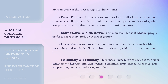Uncertainty Avoidance — it's about how comfortable a culture is with uncertainty and ambiguity. Some cultures embrace it, while others try to minimize it. Masculinity versus Femininity — masculinity refers to societies that favor achievement, heroism, and assertiveness. Femininity represents cultures that value cooperation, modesty, and caring for others.